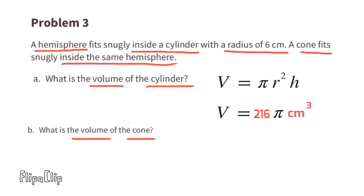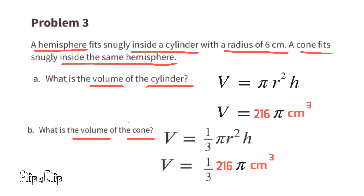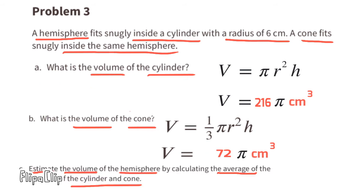Part b: the volume of the cone is one-third the volume of a cylinder with the same radius and height. So V = (1/3) × 216π = 72π cubic centimeters. Part c: estimate the volume of the hemisphere by averaging the cylinder and cone volumes. Adding 216 + 72 = 288, then dividing by 2 gives 144. The estimated volume of the hemisphere is 144π cubic centimeters.